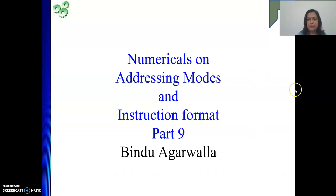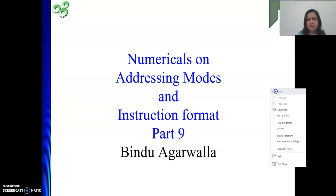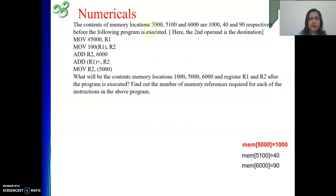So the problem is also similar to our gate numerical. The contents of memory locations 5000, 5100, and 6000 are 1000, 40, and 90 respectively before the program is executed. These values are there before the program has started its execution. Then this program will be executed.